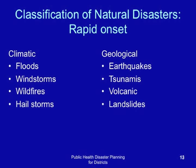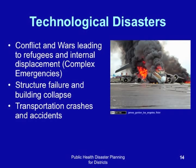Technological disasters are often man-made. They result from activities or omissions by human beings. They include conflict, wars leading to refugees and internal displacement — these are often called complex emergencies. Technological disasters also include disasters like structural failure, building collapse, transportation crashes, and accidents both on water and on roads, as well as chemical explosions and factory explosions.